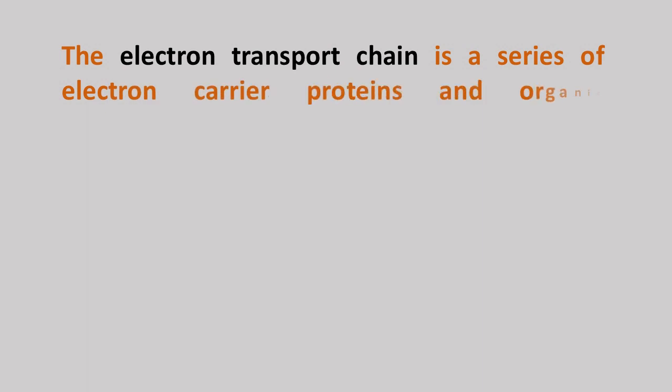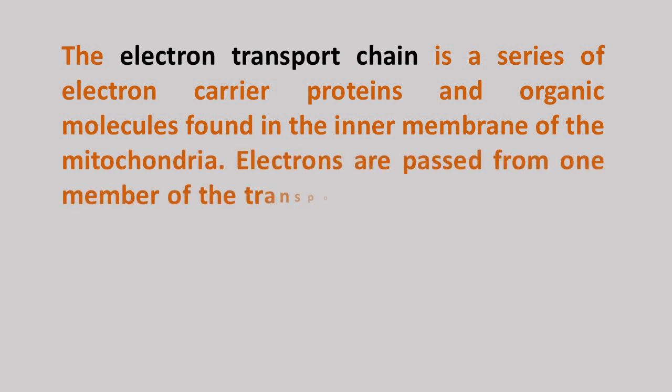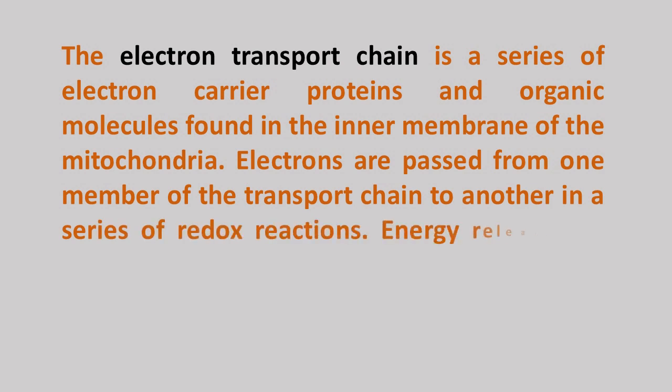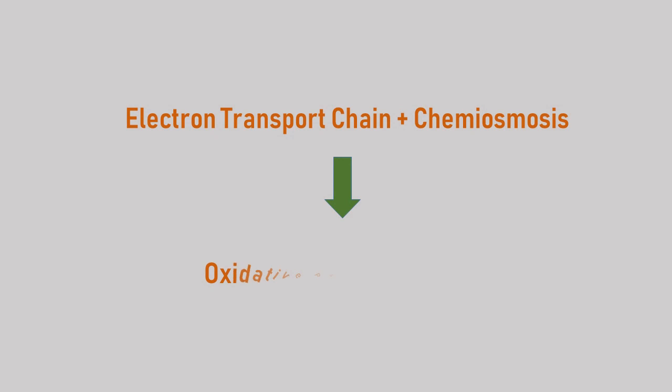The Electron Transport Chain is a series of electron carrier proteins and organic molecules found in the inner membrane of mitochondria. Electrons are passed from one member of the transport chain to another in a series of redox reactions. Energy released in these reactions is captured as a proton gradient, which is then used to make ATP in a process called chemiosmosis. The aggregate of these two closely associated processes, electron transport chain and chemiosmosis, is called oxidative phosphorylation.